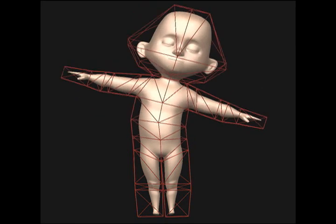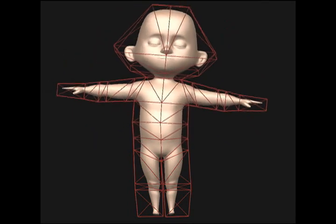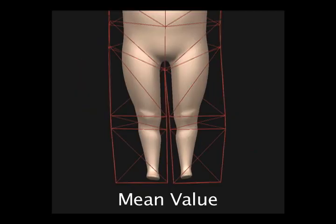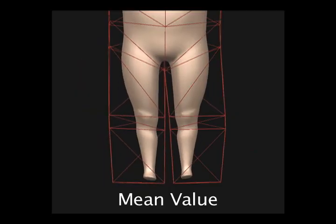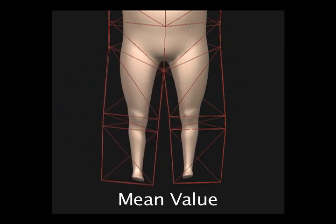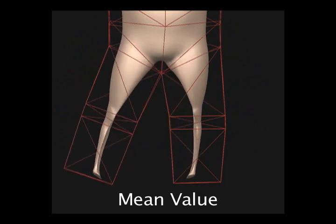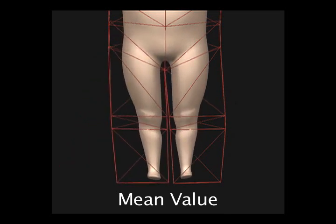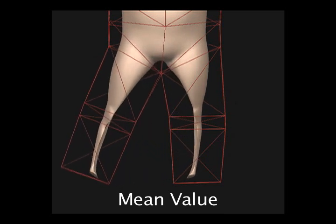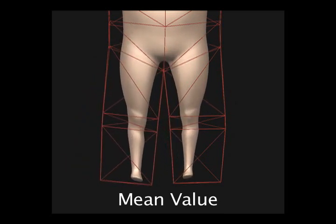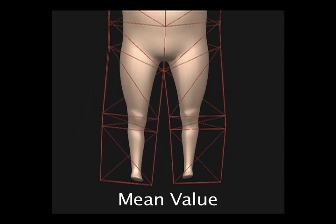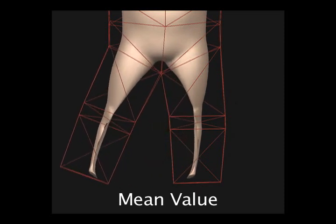Deforming the character using mean value coordinates produces pleasing results when the limbs are separated, as shown here. However, in strongly concave regions like the legs, mean value coordinates produce undesirable motion. Notice that the motion of the cage points for the leg on the left strongly influences the object points of the leg on the right. This occurs because mean value coordinates are based on straight-line distance. Since the straight-line distance between the legs is small, the influence is large. Notice too that the object points move counter to the cage points, because mean value coordinates can be negative.